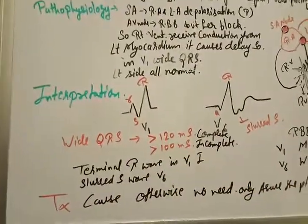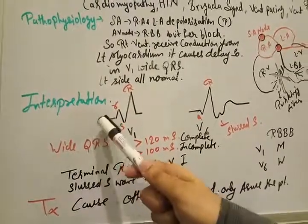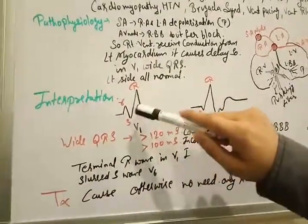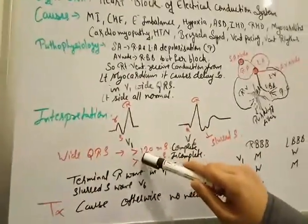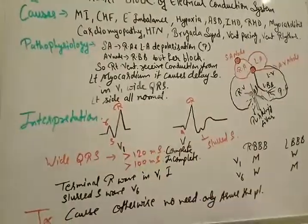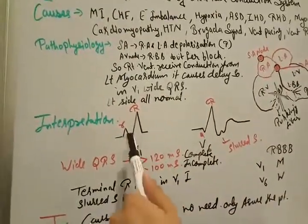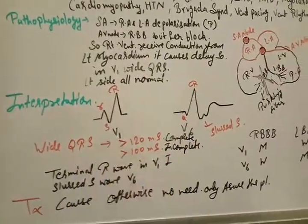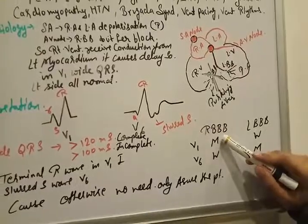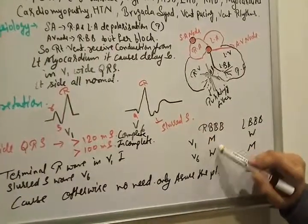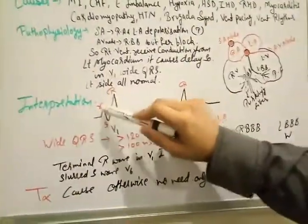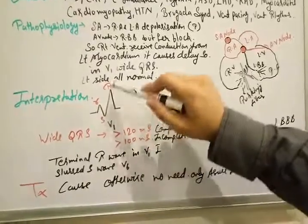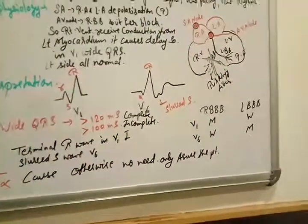Now how to interpret the ECG of right bundle branch block. Right bundle branch block ECG shows a wide QRS, which must be more than 120 milliseconds. Small r, S, and capital R in lead V1. So in V1 we see the M pattern - small r, capital S, and capital R. This is the M pattern.